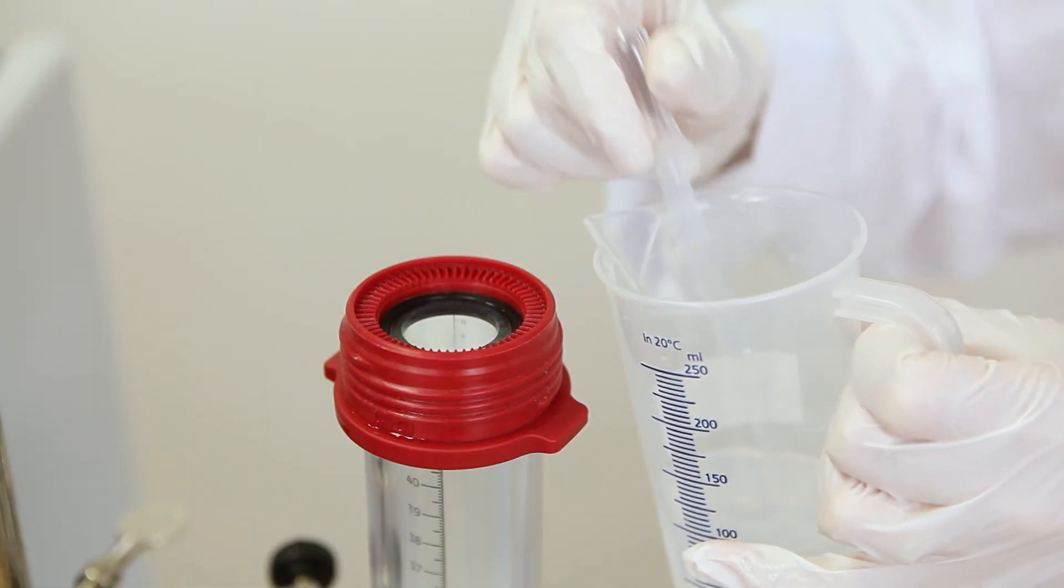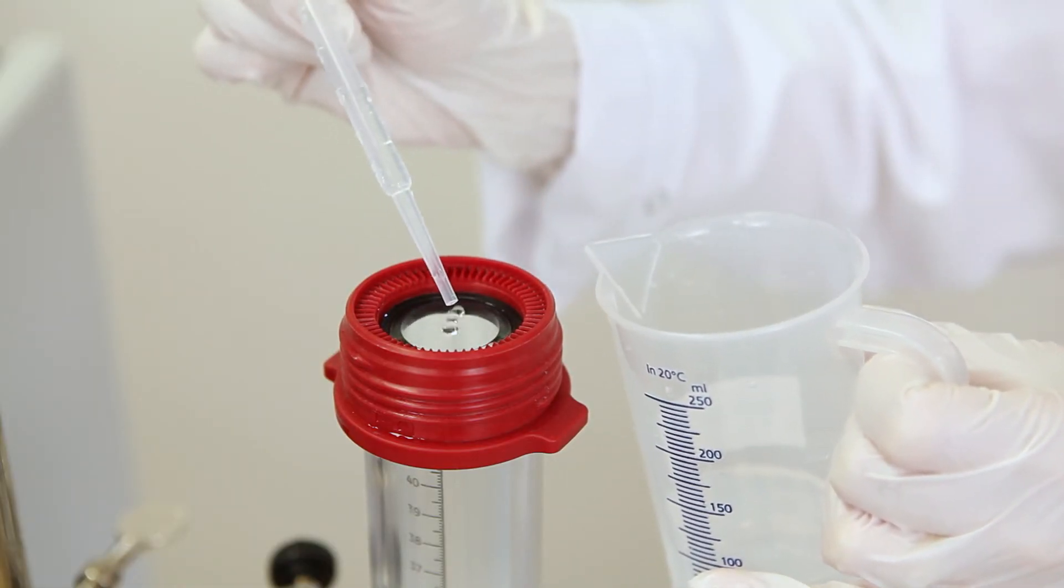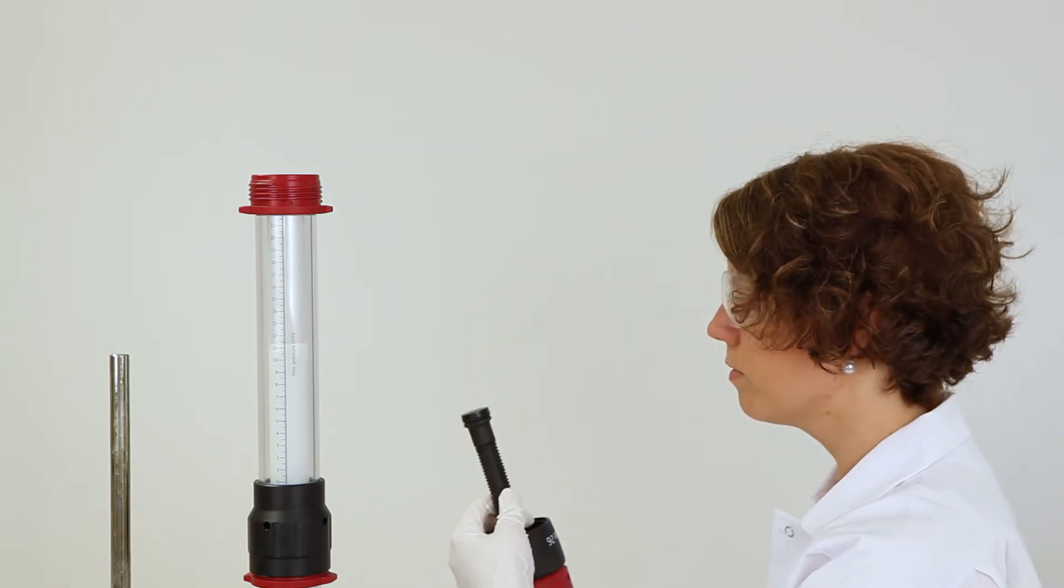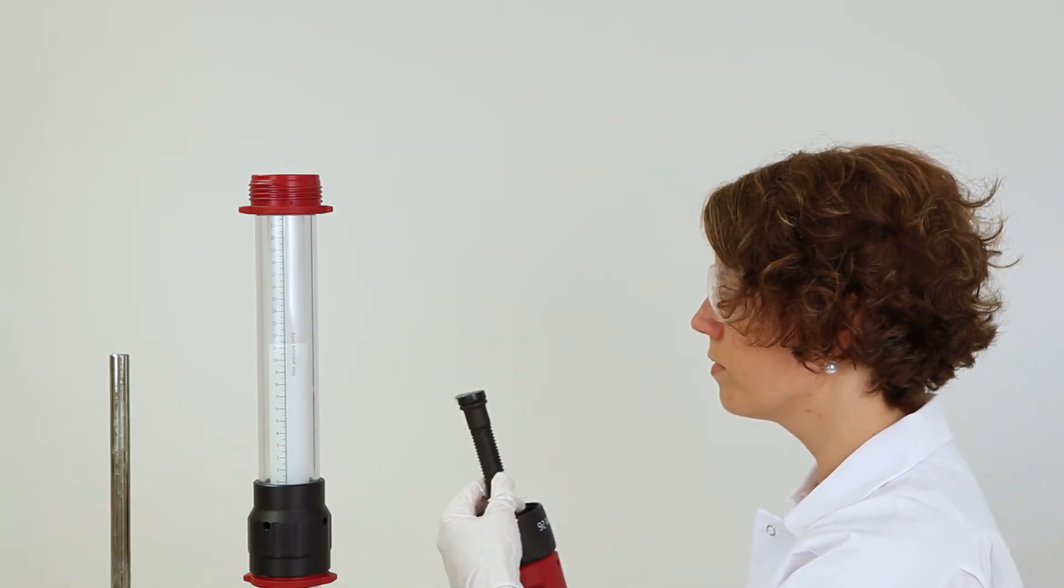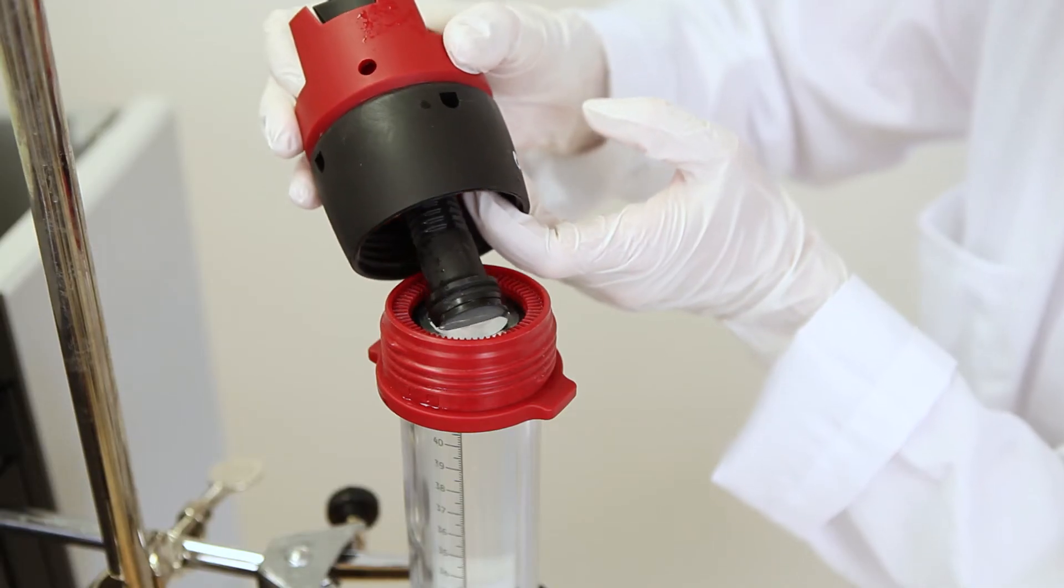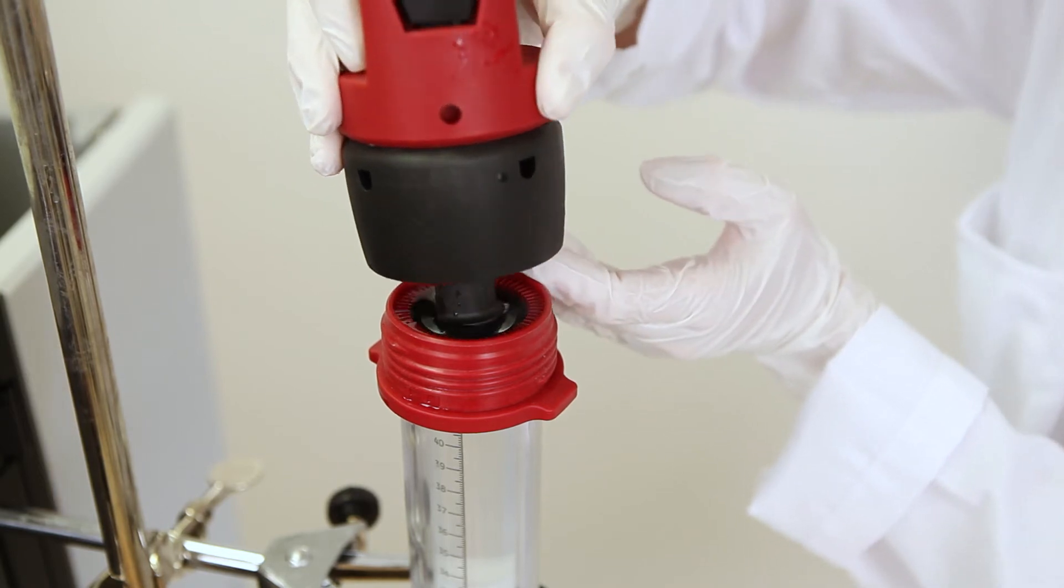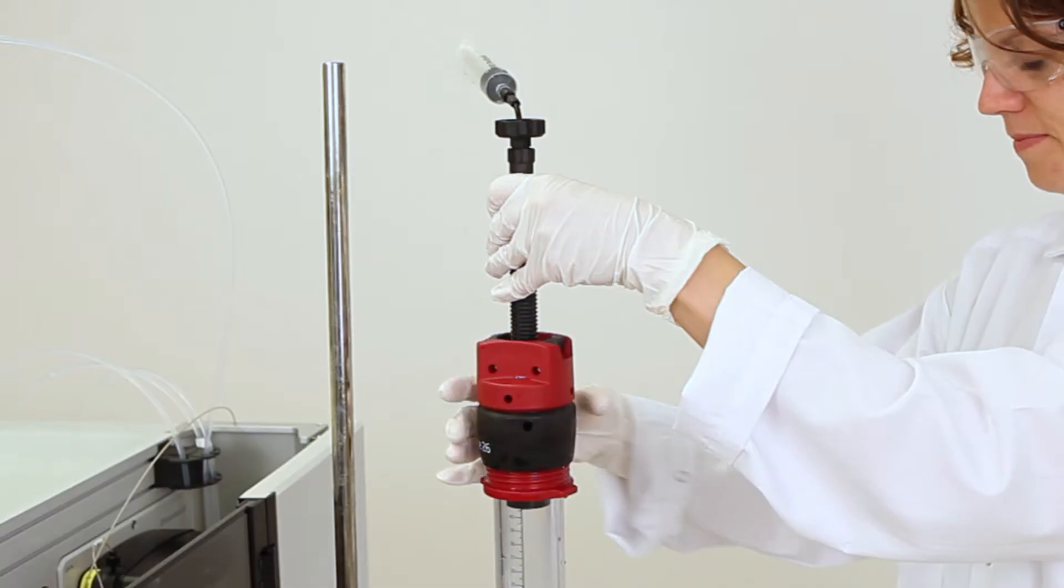Top up with packing solution until a meniscus is formed at the top. Before mounting the top adapter, eliminate air by forcing 20% ethanol through the adapter. Insert the adapter at a 45-degree angle to avoid trapping air inside the column. Fasten the end housing.